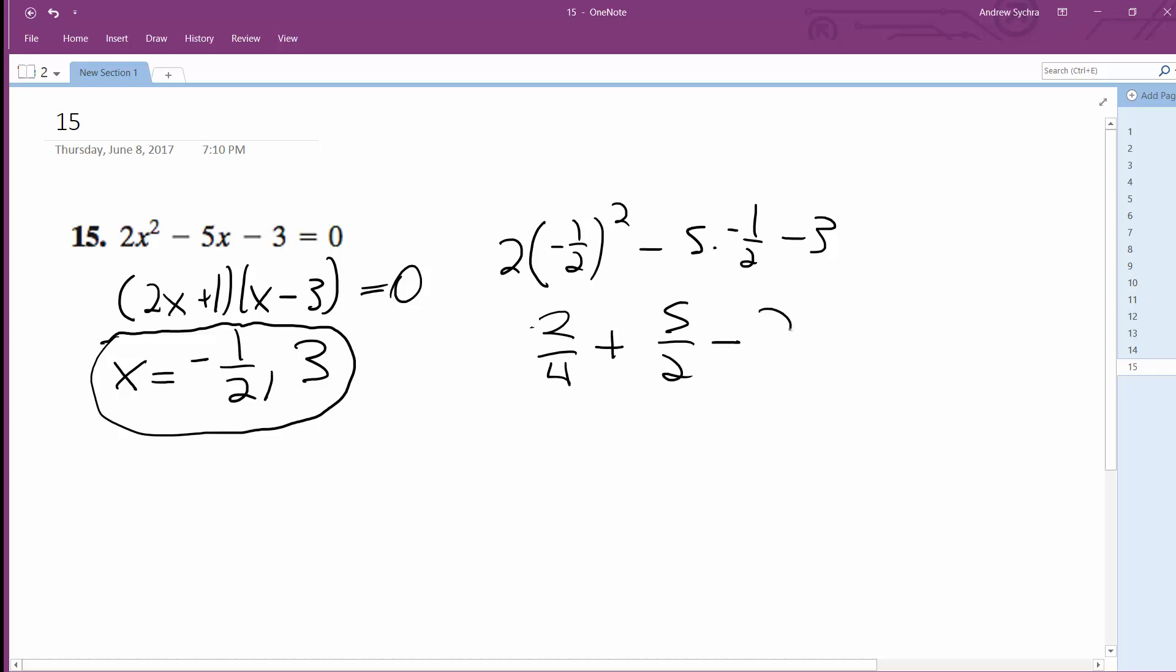And then this is minus 3, so this becomes 6, or actually this becomes 1/2 plus 5/2, which is 6/2, which is 3 minus 3 equals 0.